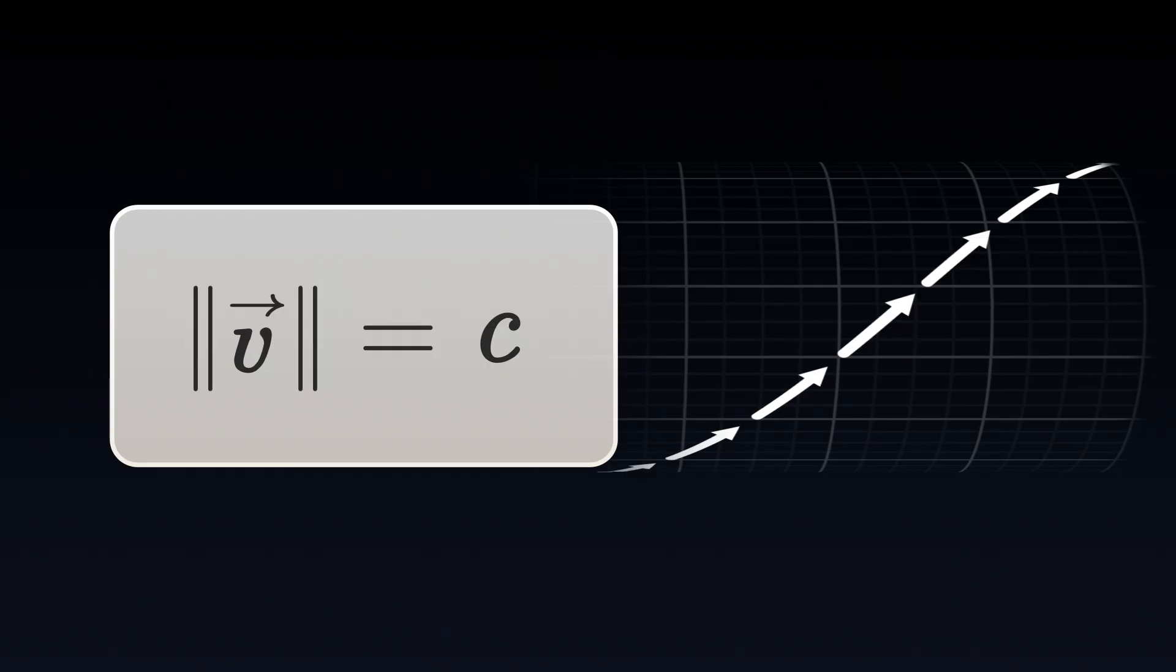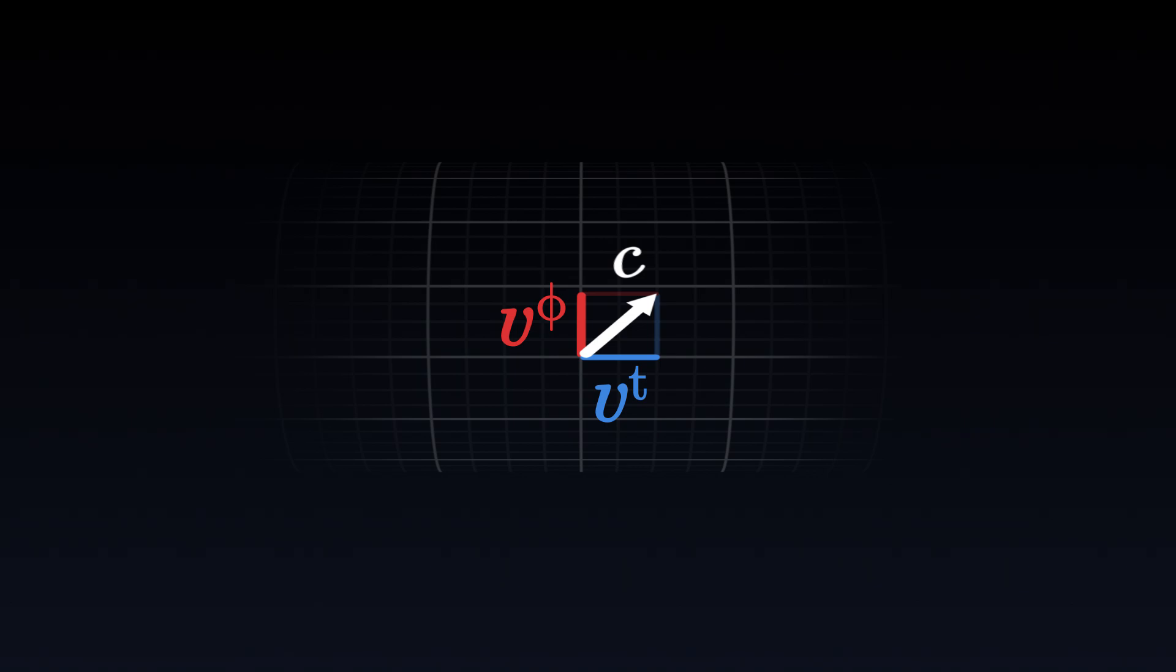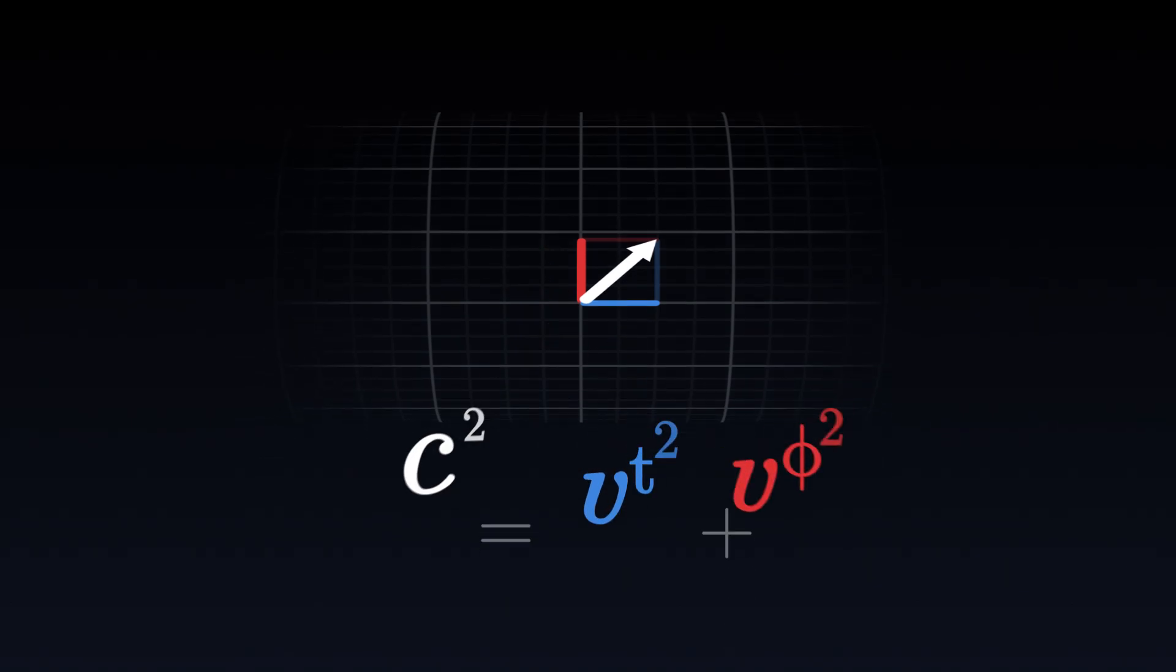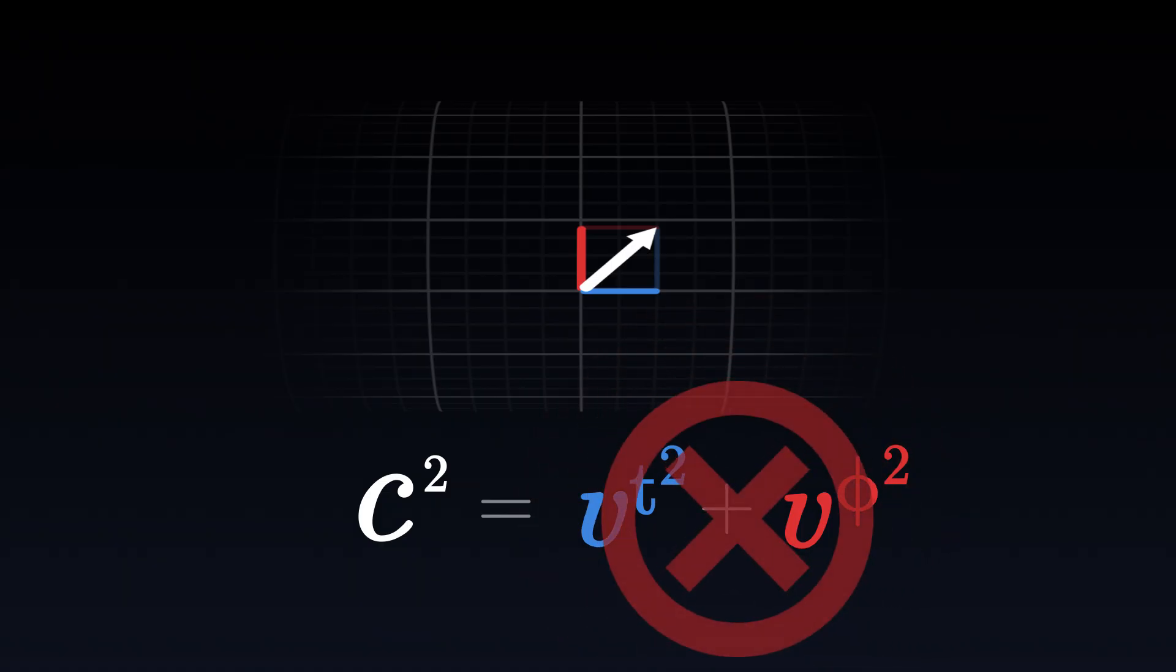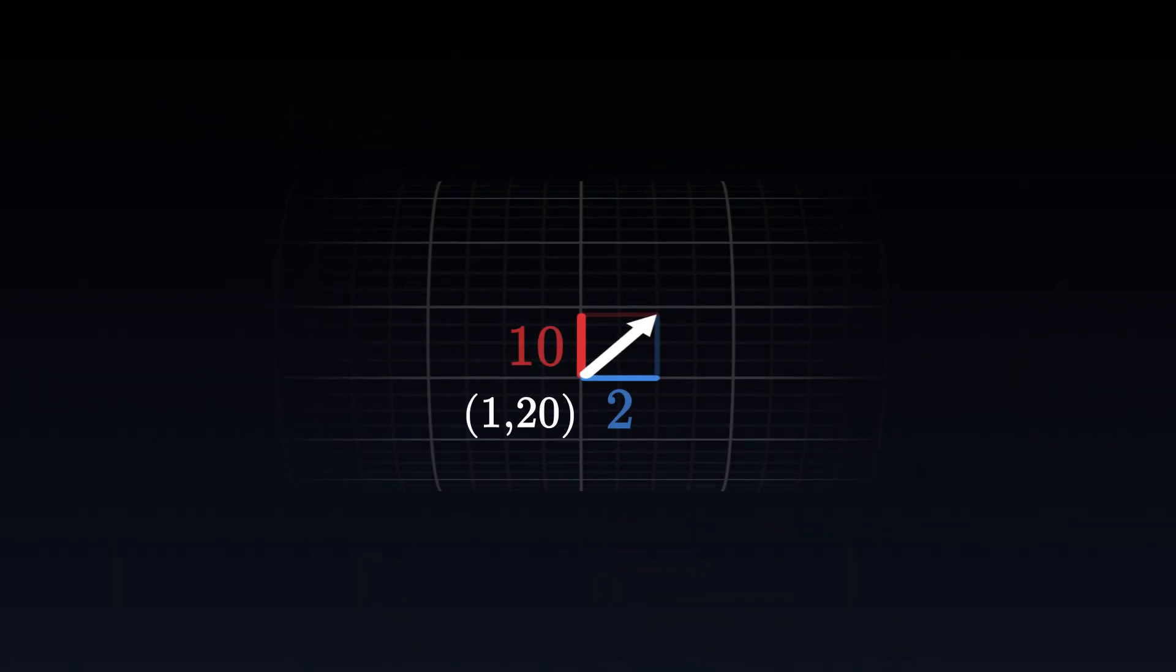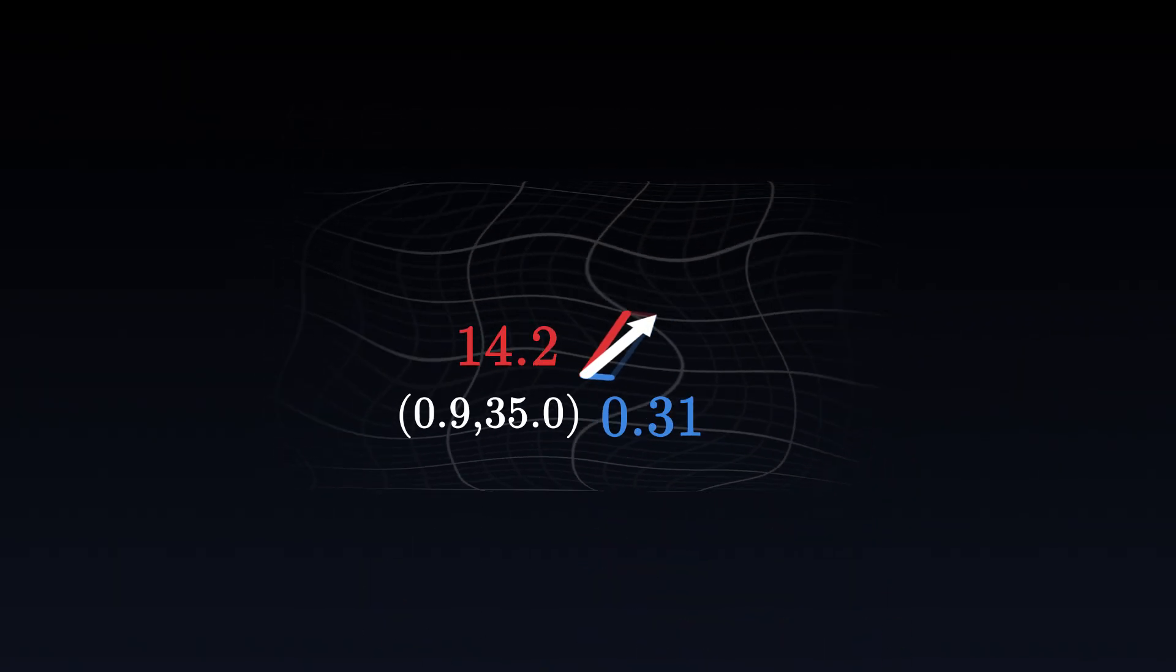The first equation we obtained before allows us to say that the length of the vector is always the same. This is the speed of light. At a glance, one might think that we can use the Pythagorean theorem to calculate the length of the velocity given its components. But it is crucial to understand that the coordinates do not represent real distances. Their values and their rate of change are arbitrary numbers which do not have real physical significance.